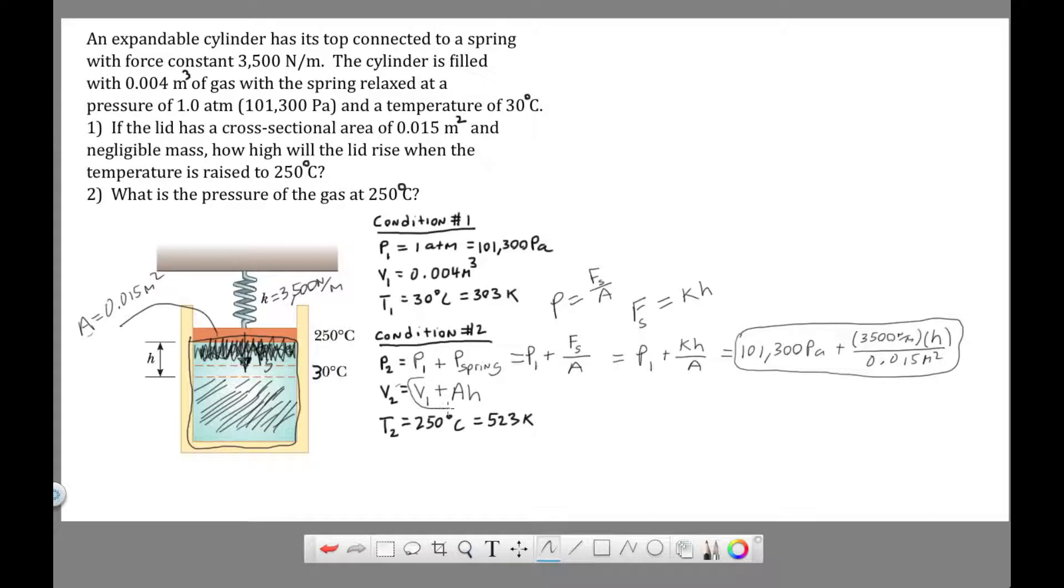Okay, so the gas law that applies here. The way I teach this in class is you always start with PV equals NRT. This is a condition one, condition two type of problem. In this problem, N remains constant and R remains constant. So PV over T is equal to NR, and NR is constant. This gives us the gas law P1 V1 over T1 equals P2 V2 over T2.